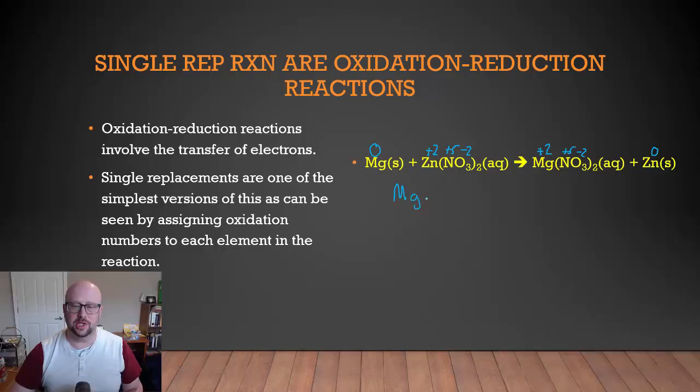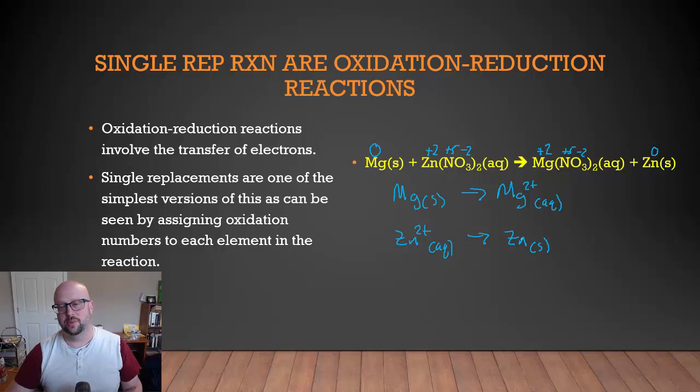Essentially, what's going on in this reaction is two things. Solid magnesium is becoming oxidized into its aqueous ion with a charge. So it was neutral magnesium in its solid form. Now it is magnesium with a plus two charge in its aqueous state. And then zinc that had a two plus charge in its aqueous state is now being reduced to having a zero oxidation state and to being its solid state.